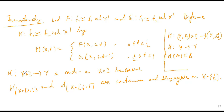The domain of capital H is X cross I. We have divided its domain into two parts: X cross [0,1/2] and X cross [1/2,1]. Each restriction is continuous, and they agree on the overlap. So capital H is continuous by the pasting lemma in topology, which you may have seen before.